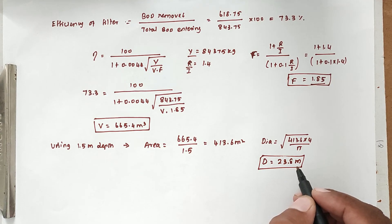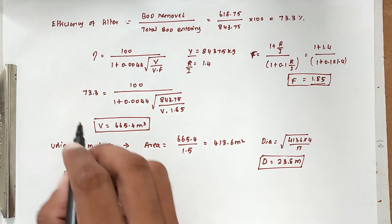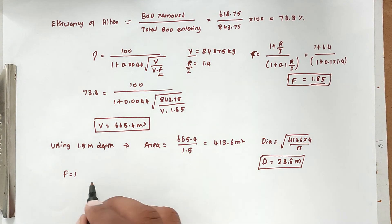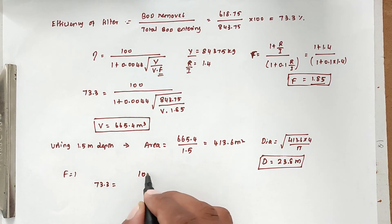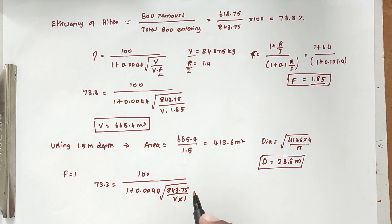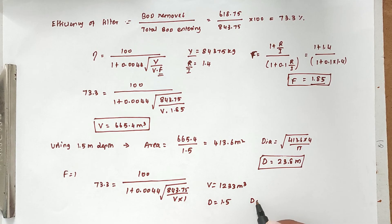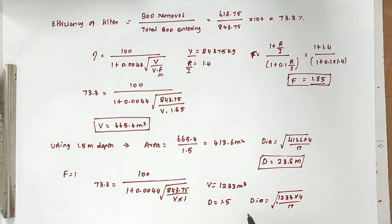For the equivalent standard rate trickling filter, F = 1. Substituting F = 1 into the NRC formula: 73.3 = 100 / (1 + 0.0044 × √(843.75 / V) × 1), and solving gives a volume of 1233 cubic meters. With depth 1.5 meters, the diameter equals √(1233 × 4 / π), giving a diameter of 32.4 meters for the standard rate trickling filter.